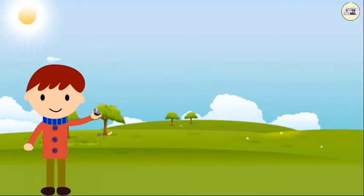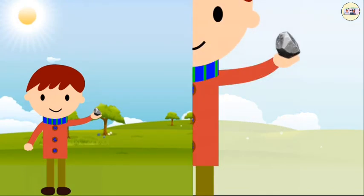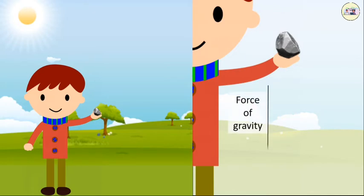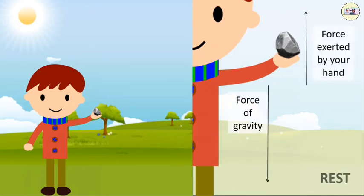Let us understand free fall by an example. Take a small stone in your hand. When you are holding the stone, it is experiencing the force of gravity, but it is balanced by the force that we are applying on it in the opposite direction. As a result, the stone remains at rest.